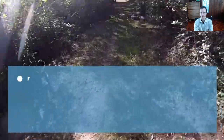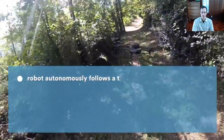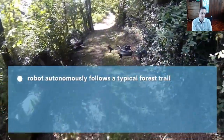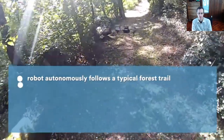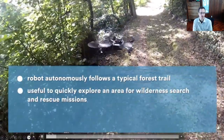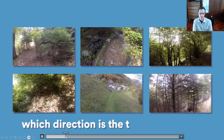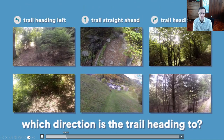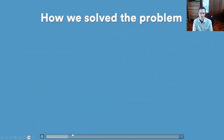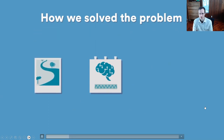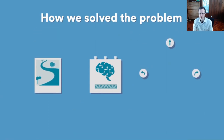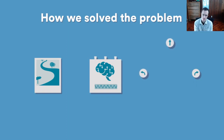The idea is pretty straightforward. They have a network that looks at the image and predicts one of three discrete labels: left, right, and straight. The data collection procedure is actually very straightforward — they didn't actually have humans fly the quadcopter. What they did instead is get a person to walk the hiking trails wearing a hat with three cameras: a forward-facing camera, a left-facing camera, and a right-facing camera.